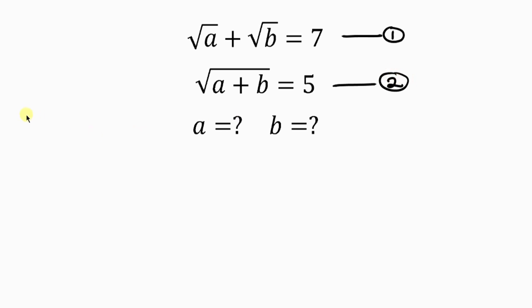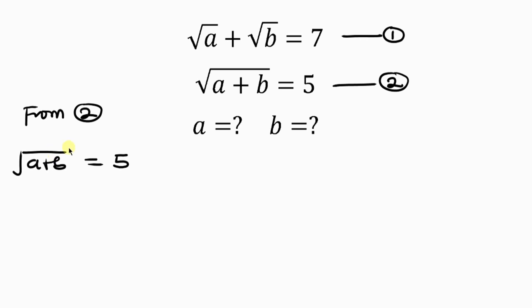We're going to start from equation 2. Equation 2: the square root of A plus B is equal to 5. To get rid of this square root, we just have to square both sides. Notice that this square cancels out the square root, leaving behind A plus B equal to 25. We can call this equation 3.